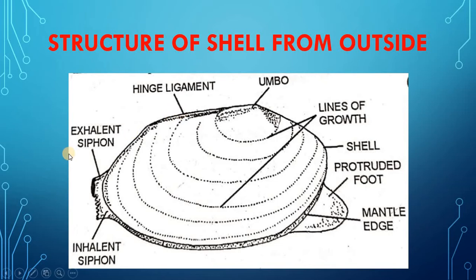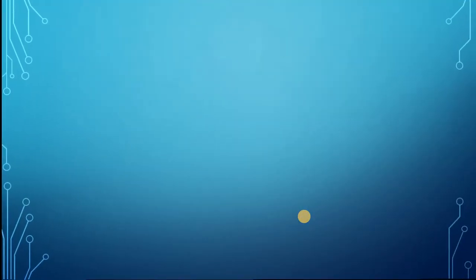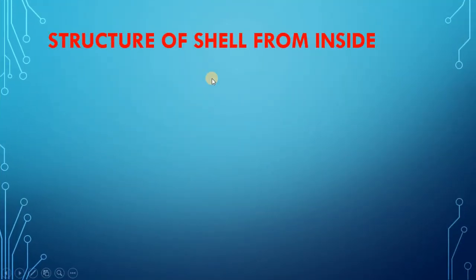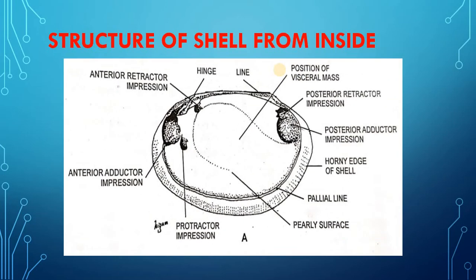Other features highlighted in the picture are the exhalant siphon, inhalant siphon, protruded foot, and the mantle edge. Regarding the structure of the shell from inside, after removing one of the shell valves, a few conspicuous markings — the muscle impressions — are seen on its inner pearly surface, as will be made clear by the picture.